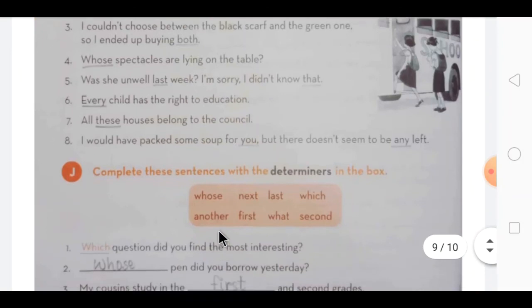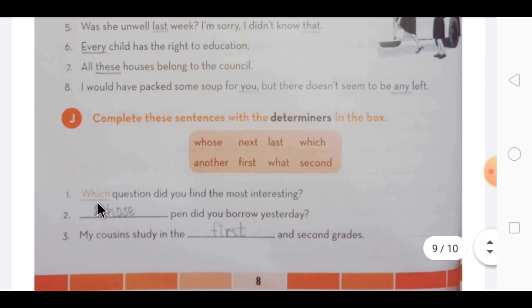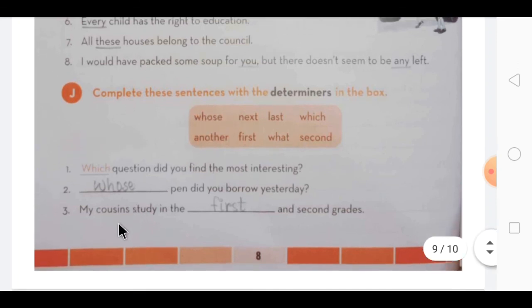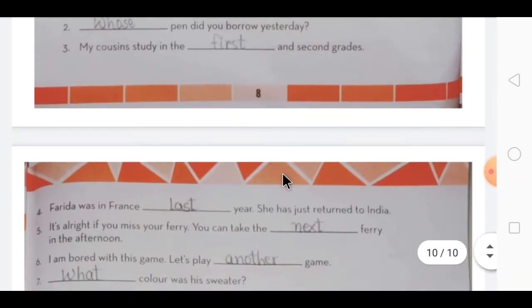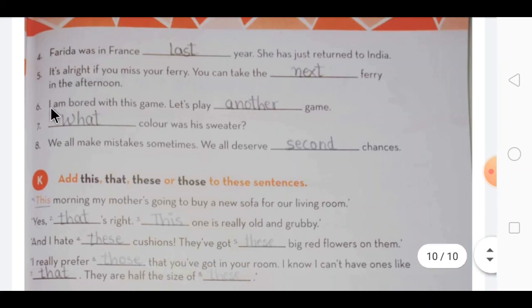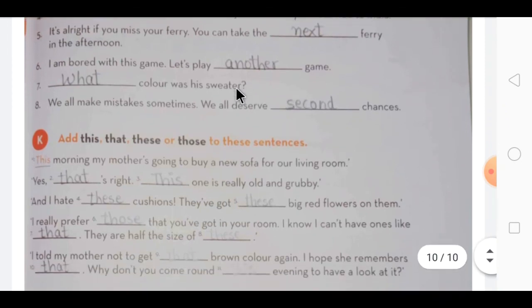Now the next exercise, here one help box is given. A determiner help box is given. According to that, whichever is suitable in the blank, you have to take it from this help box and write it over here. First one is already done. Now here, it is a question, so a wh word will come. Whose pen did you borrow yesterday? So you have to take this determiner, whose, from the help box. My cousin study in the dash and second grade. So first and second grade. According to the sentence, you have to put the determiners. Then next, Farida was in France last year. In this the ordinal determiner came. It's alright if you miss your ferry, you can take the next ferry in the afternoon. So I am bored with this game, let's play another game. Again here the question one came, and in this ordinal came. So this way you have to complete that exercise.